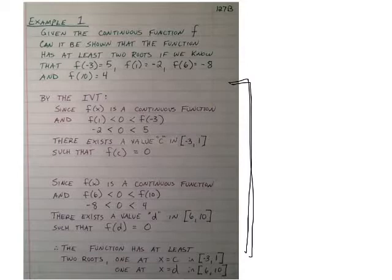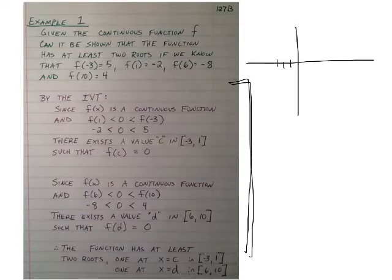So let's graph what this looks like. What we have is some function and f of negative 3 is 5. We know that f of 1 is negative 2, f of 6 is negative 8, and f of 10 equals 4.